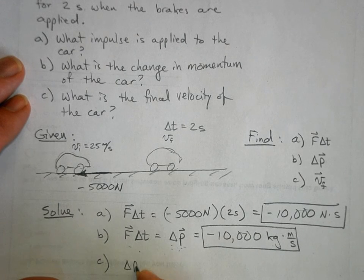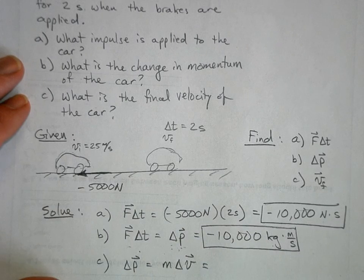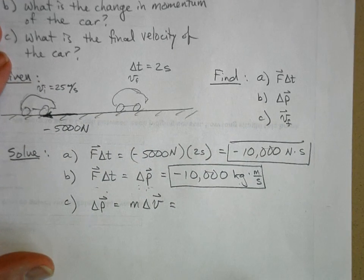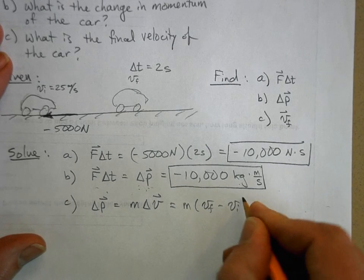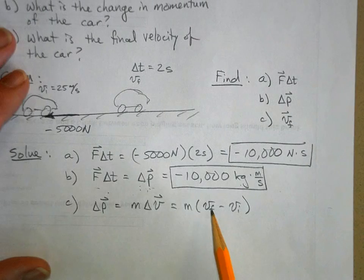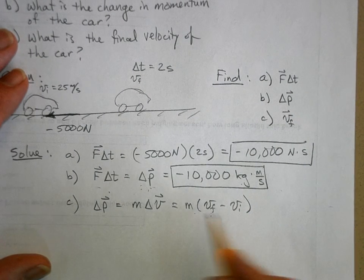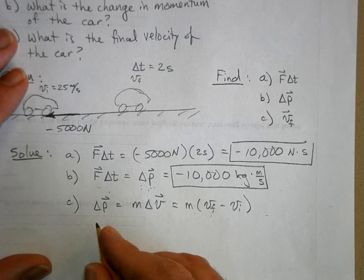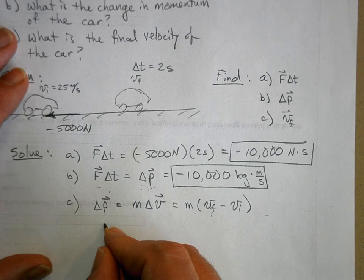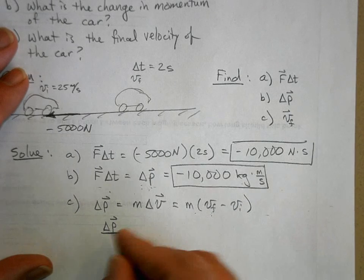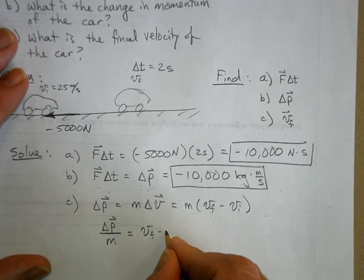We know that change in momentum is equal to mass times a change in velocity, right? But a change in velocity is V final minus the initial. So I want to find this V final. So first let's divide everything by the mass. So I get delta P, the change in momentum divided by the mass, is equal to V final minus V initial.